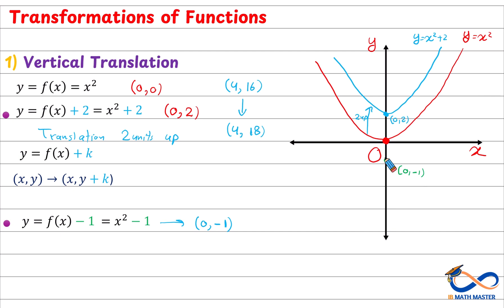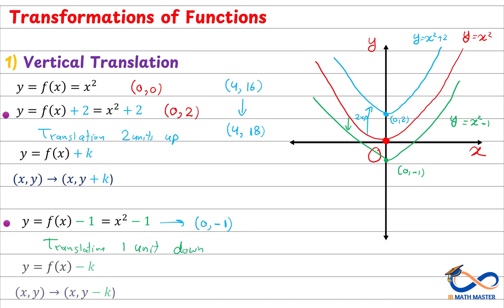If we graph the parabola, it will be like this — shifted 1 unit down. This is the graph of y equals x squared minus 1, so we have a translation of 1 unit down. Generally speaking, if we subtract k from f of x, it will be a translation of k units down, and the point (x, y) will become (x, y − k). For example, if you have the point (5, 25) and translate 1 unit down, it becomes (5, 24).